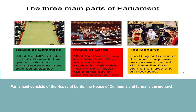Westminster Palace is the seat of the British Parliament. It was built by Edward the Confessor in about 1050, and was used as a royal residence, then as a seat of government, and finally, after 1547, as a meeting place for Parliament.